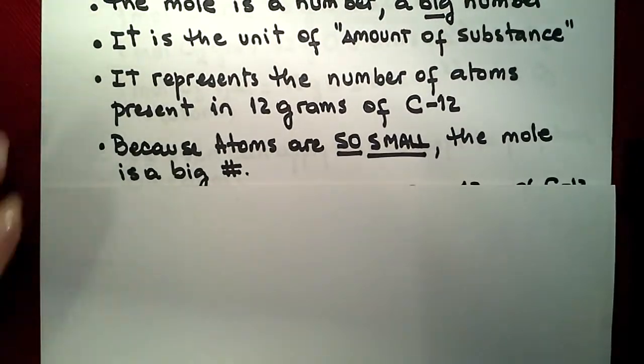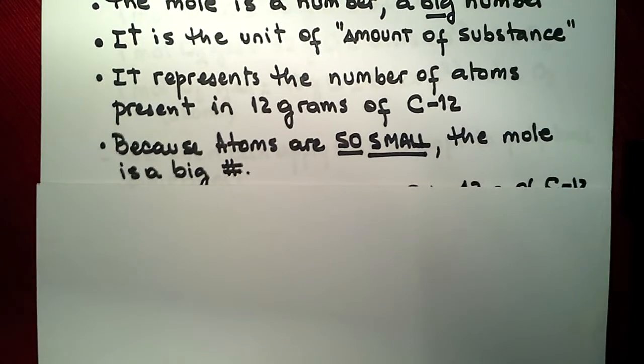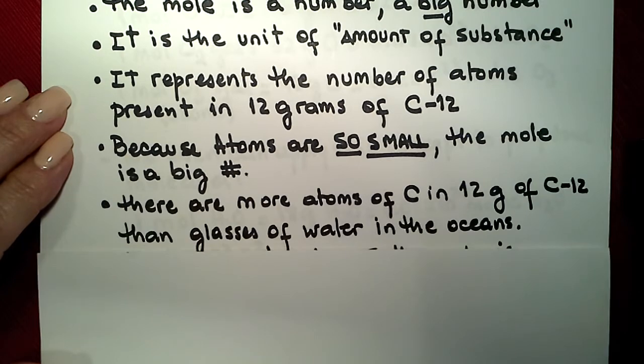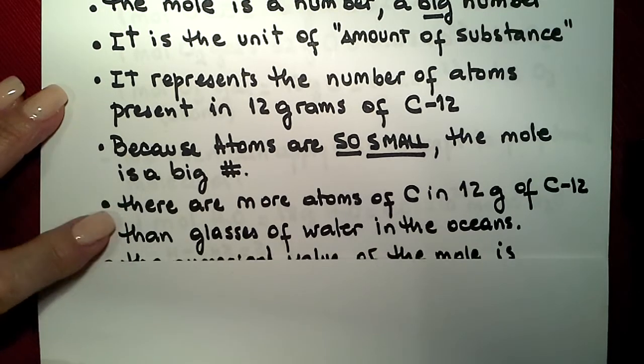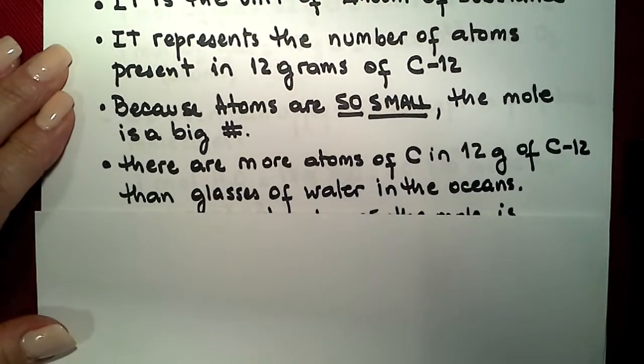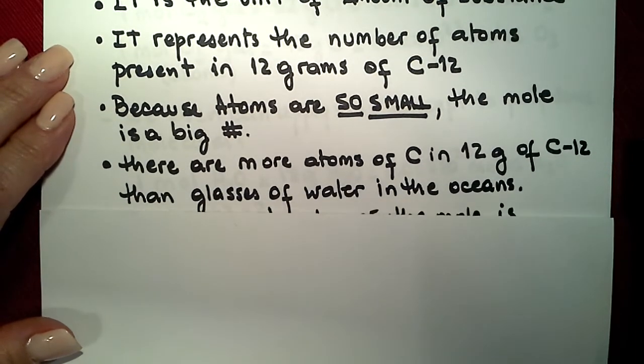Because the atoms are so small, the number of atoms present in one mole of atoms is very, very big. And it's so big that if we count the amount of glasses of water in all the oceans, we are not going to get to that big number that we are going to call the mole.